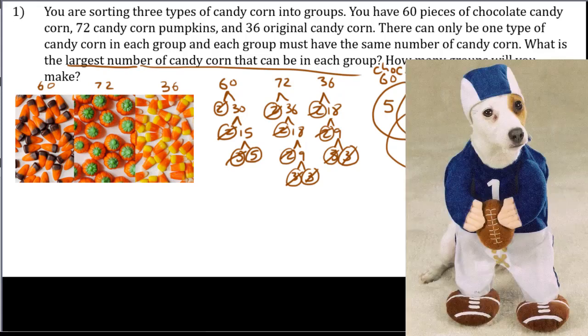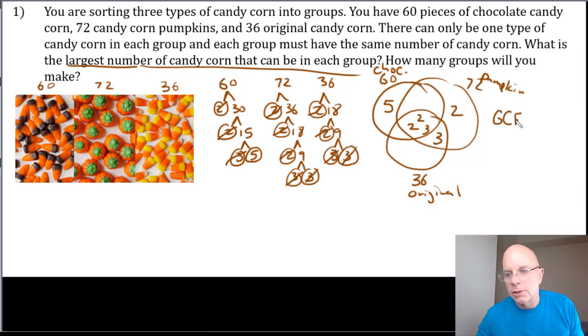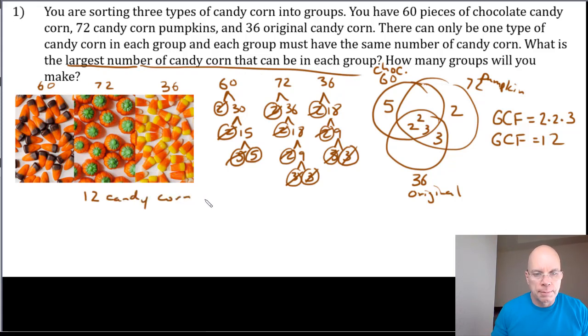The greatest common factor is the product of the prime factors in the union of the Venn diagram. So in our Venn diagram, 2 times 2 times 3, which is 12. And so that's the largest number of candy corn that can be in each group: 12 candy corn per group.